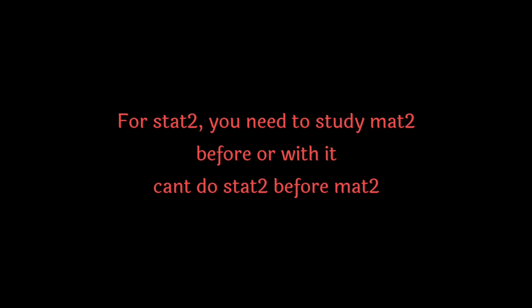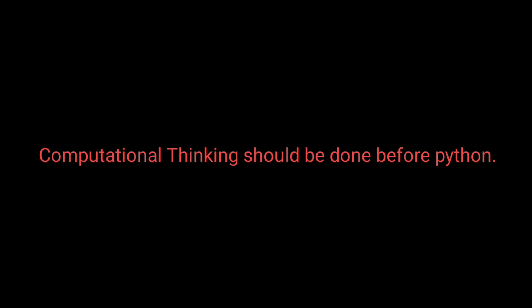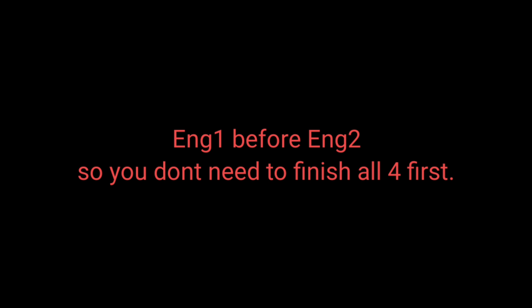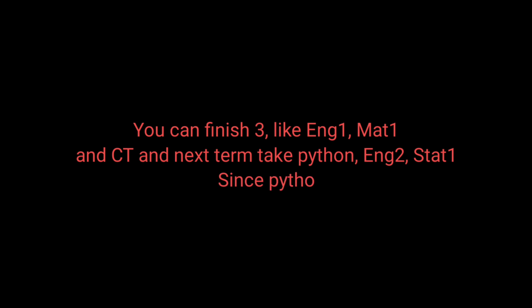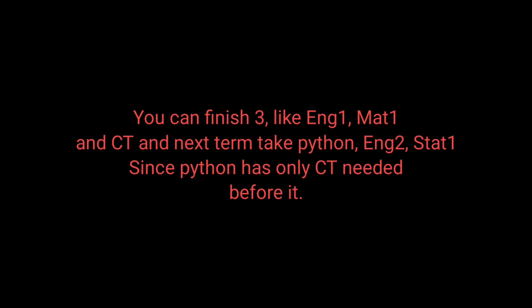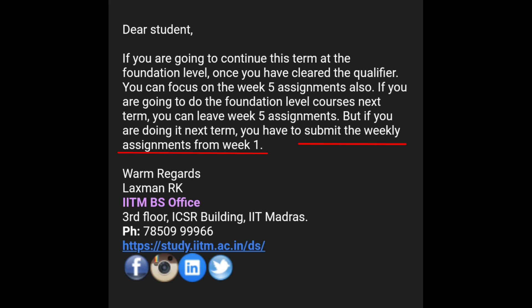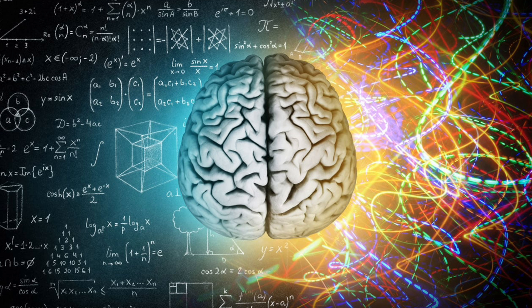Before choosing subjects, keep in mind that some courses have other courses as prerequisites. For example, for Statistics 2 you need to have studied Maths 2 and Stats 1 with or before it. You cannot do Statistics 2 before Mathematics 2, and Stats 1 and Maths 1 should be completed before Statistics 2. Computational Thinking should be done before Python, and English 1 before English 2. So you don't need to finish all four first — for example you can finish English 1, Maths 1 and Computational Thinking, then next term take Python, English 2 and Stats 1. Note: if you skip a subject for the next term, you will have to submit prerequisites starting from week 1 again for that subject.